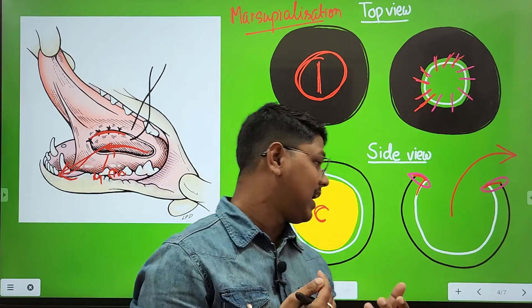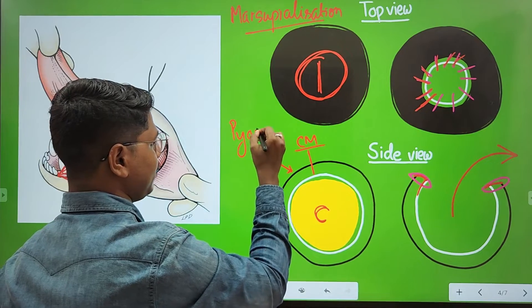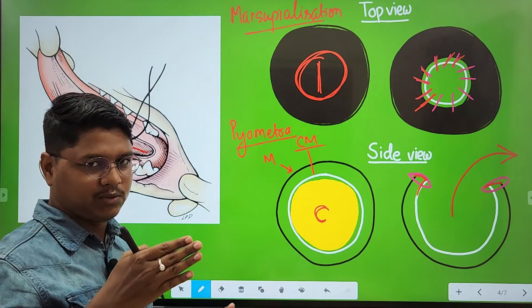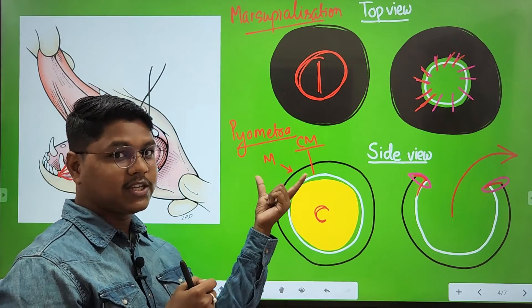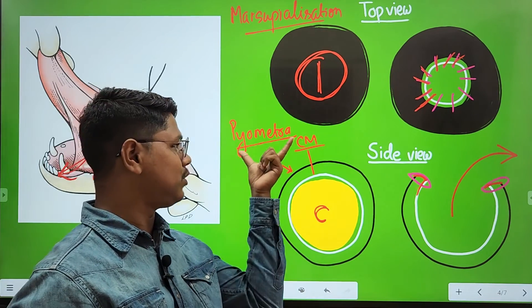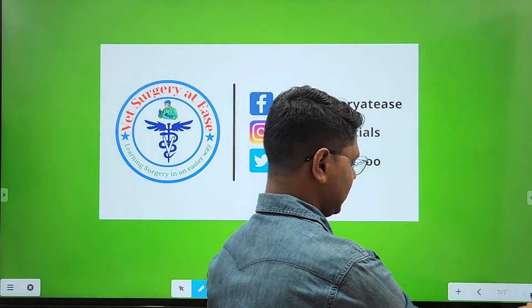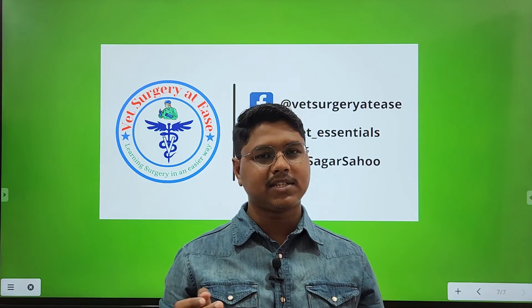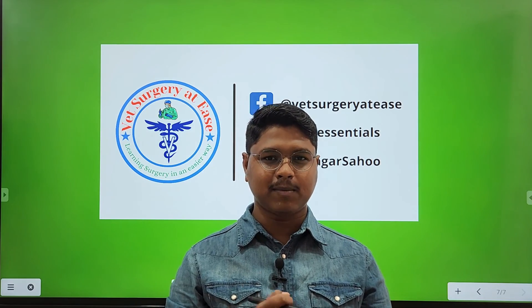To answer the earlier question: marsupialization is also performed in pyometra — marsupialization of the uterus to remove pus from the uterus, though it is not very commonly performed. Sometimes in examinations this question is asked. So this is all about the case report regarding the ranula. If you find this interesting, please like this video and share it with your friends, juniors, and seniors. If I find any more case reports I will definitely bring them to you — till then, take care.